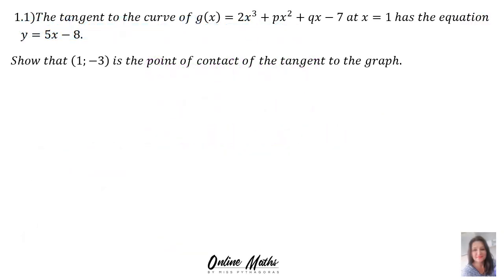Question 1.1 consists of two parts. In the first part, the tangent to the curve of g(x) = 2x³ + px² + qx − 7 at x = 1 has the equation y = 5x − 8. Can you see what is happening here? Usually they give you a proper equation and ask for the equation of the tangent. In this question, it's the other way around — they give you the equation of the tangent, and the function has variables in it.